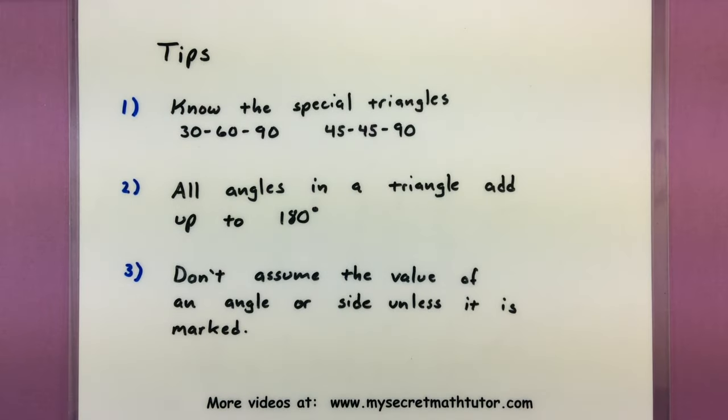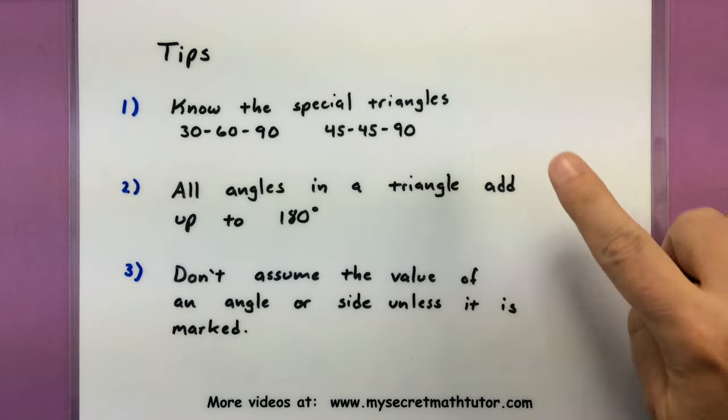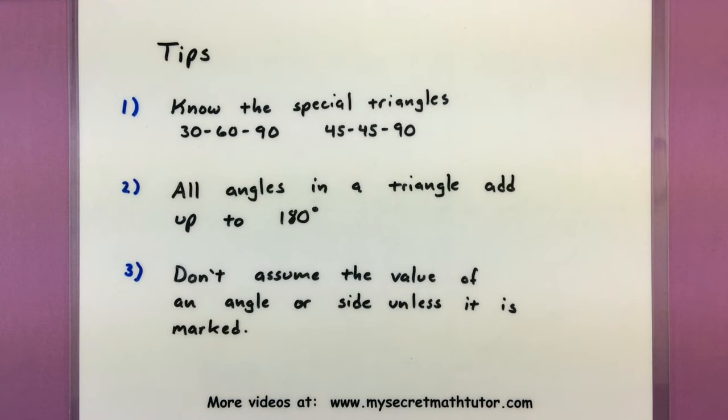Some of the tips that I think are really useful is: one, know your special triangles. By knowing your 30-60-90 and 45-45-90 triangles and how those sides are related, that will usually get your foot in the door for a few of those values. Also you should know that all angles in a triangle add up to 180 degrees. This is especially important for finding some of those missing angles along the way.